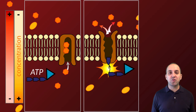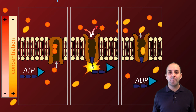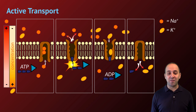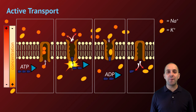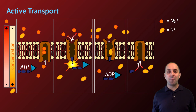This conformational change opens the pump to the extracellular side — the outside of the cell — and disrupts sodium binding while opening up sites for potassium ions. Potassium ions from the outside bind to the pump, and then the protein returns to its original conformation, open to the inside of the cell, expelling the potassium ions into the cell. The action of this pump maintains a concentration gradient across the membrane, continually establishing higher sodium outside and higher potassium inside. This is one example of active transport through the sodium-potassium pump.